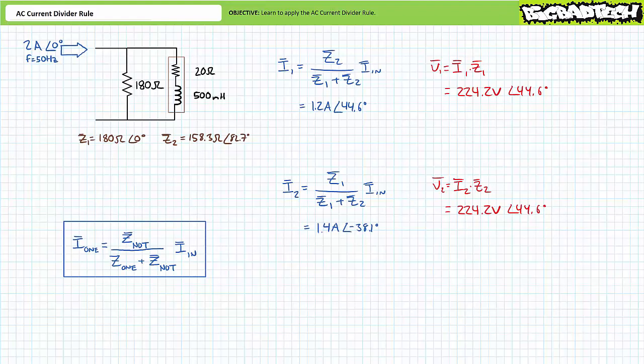In conclusion, we learned to quickly and directly calculate the current through an individual element in a parallel configuration of two known elements without the necessity of solving for total impedance nor voltage using the AC current divider rule. Remember to review these concepts as often as you need to really drive it home. Imagine how well lab will go if you know what you're doing.